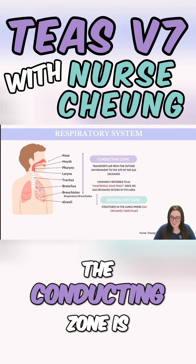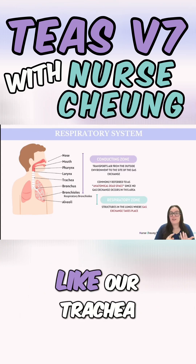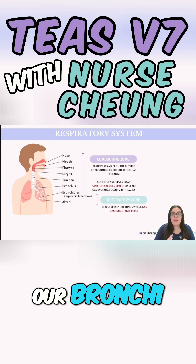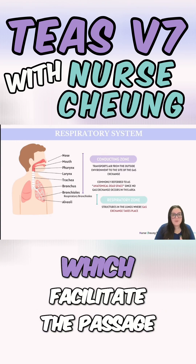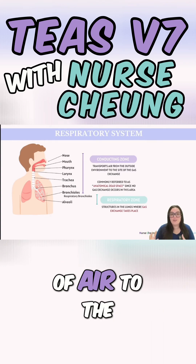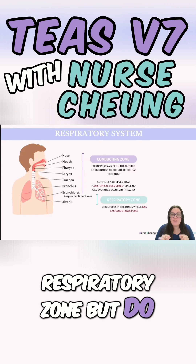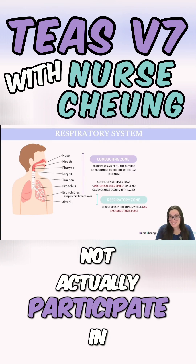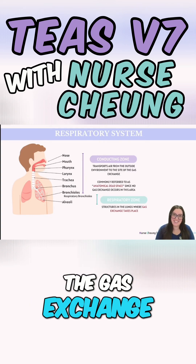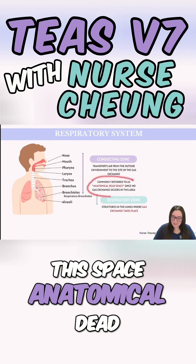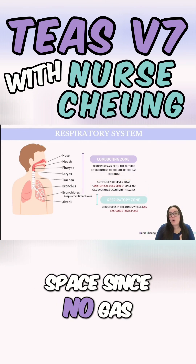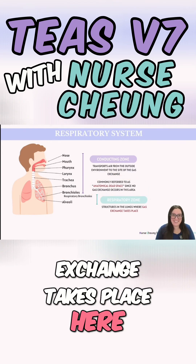The conducting zone includes structures like our trachea, our bronchi, and our terminal bronchioles, which facilitate the passage of air to the respiratory zone but do not actually participate in gas exchange. We like to call this space anatomical dead space since no gas exchange takes place here.